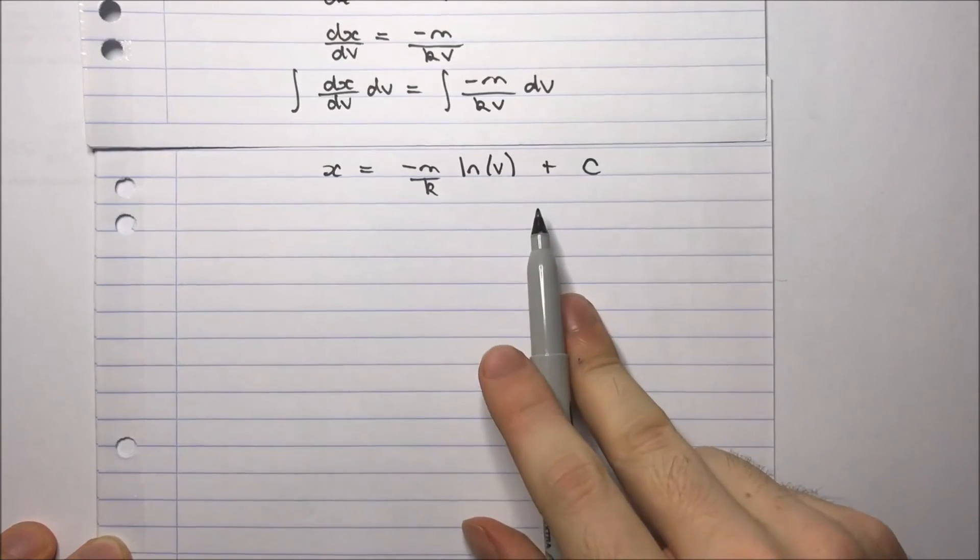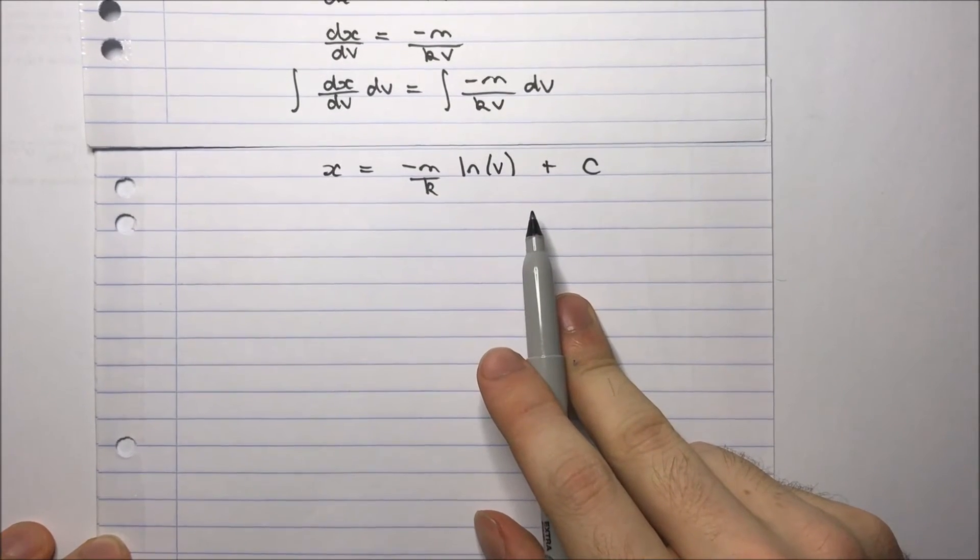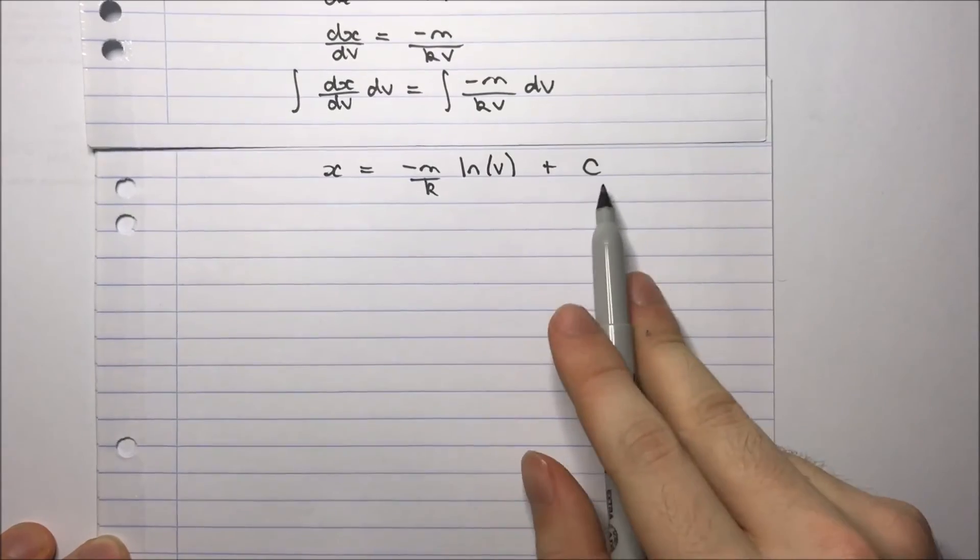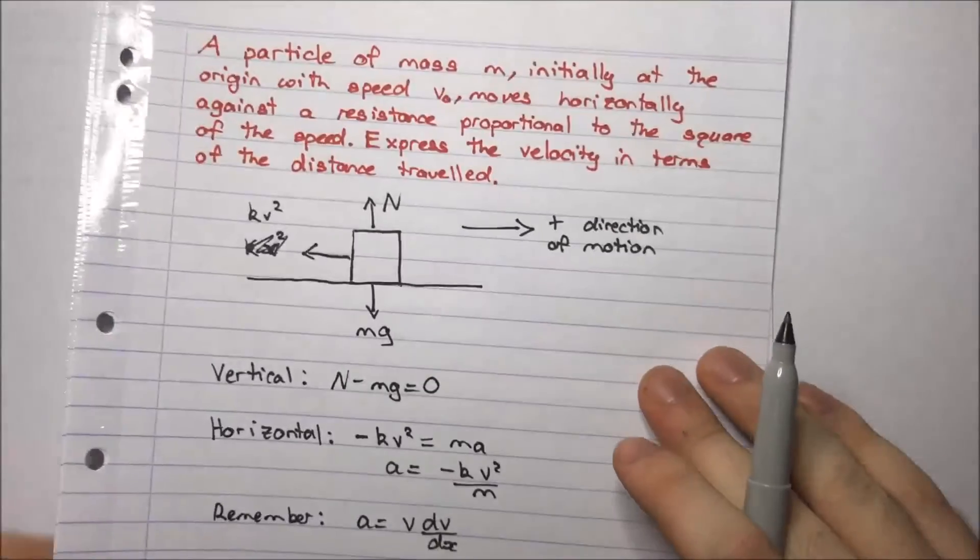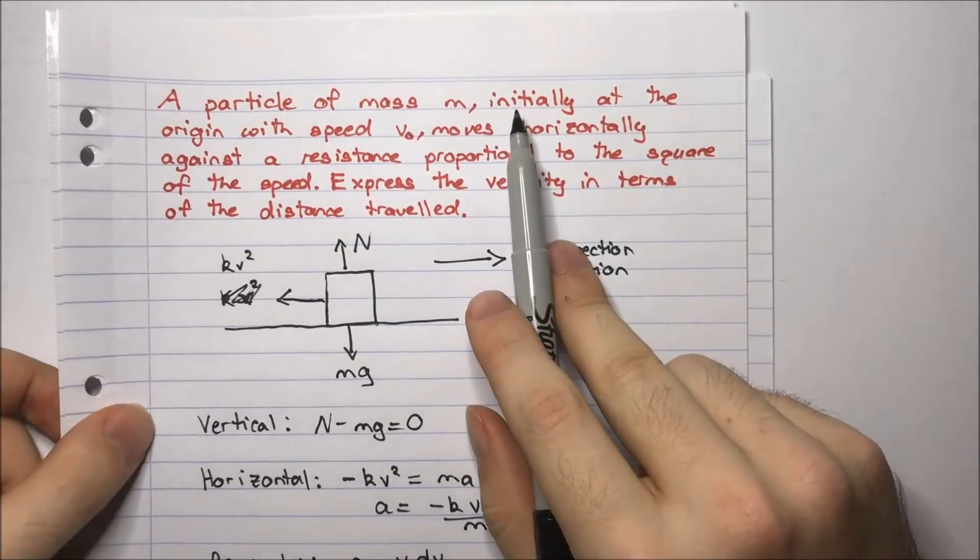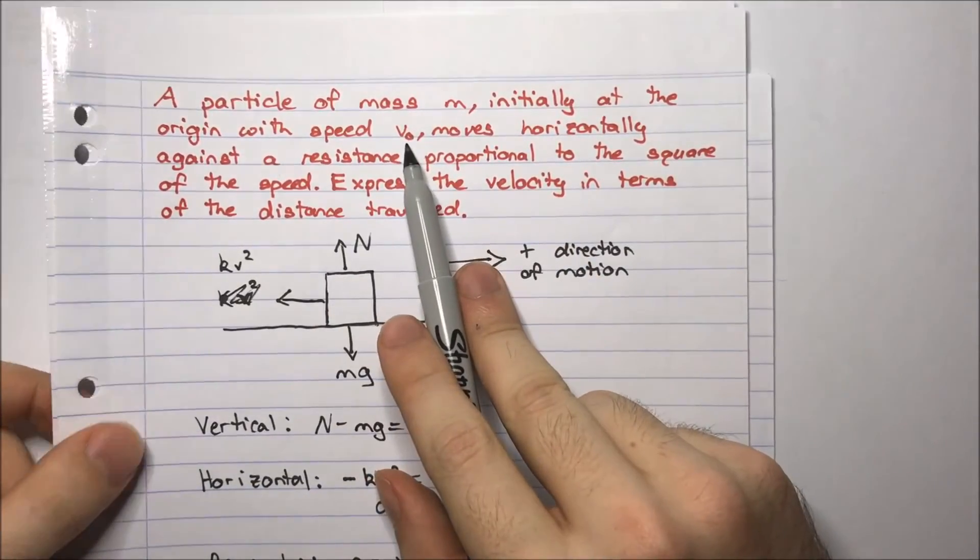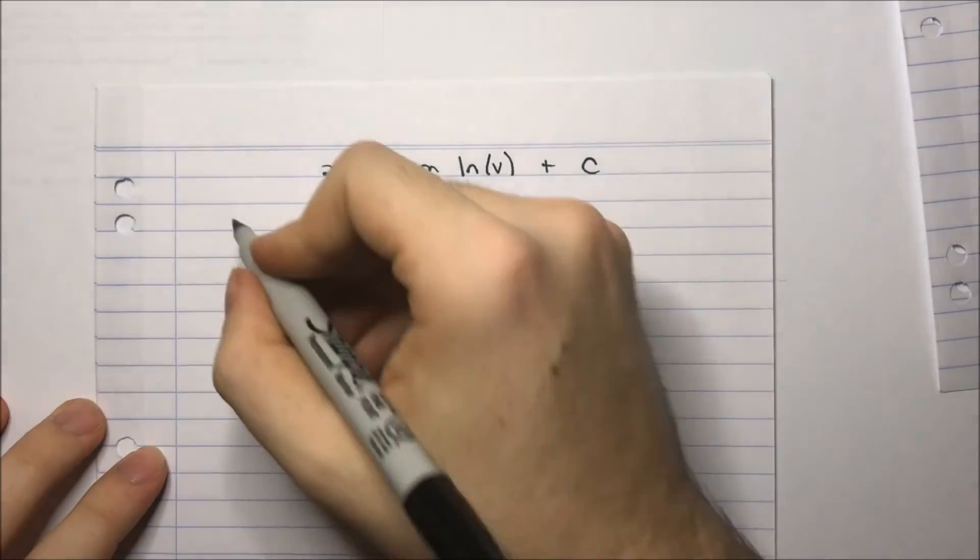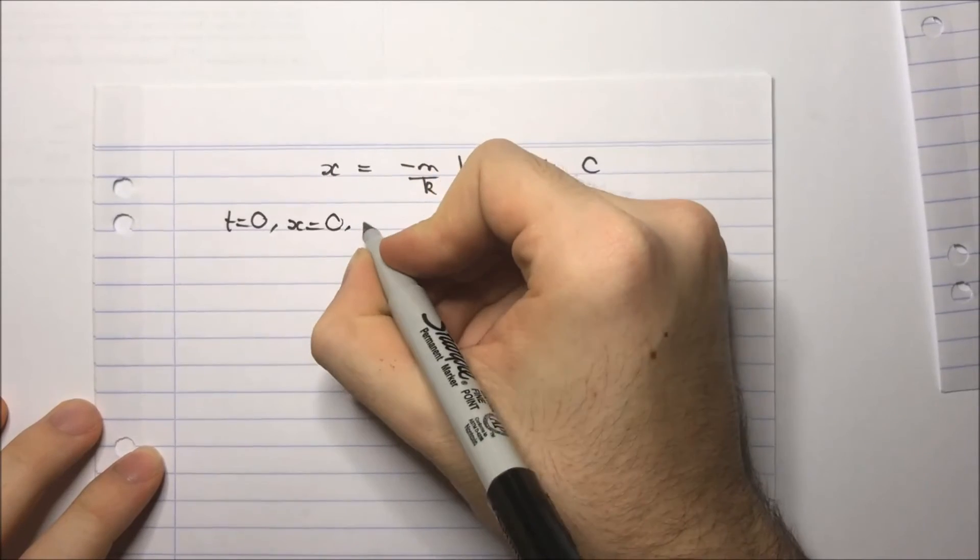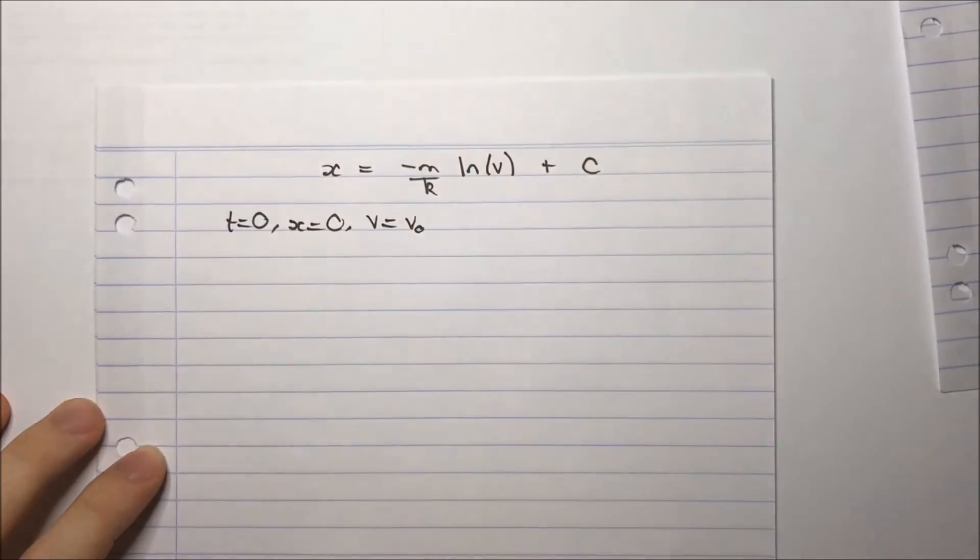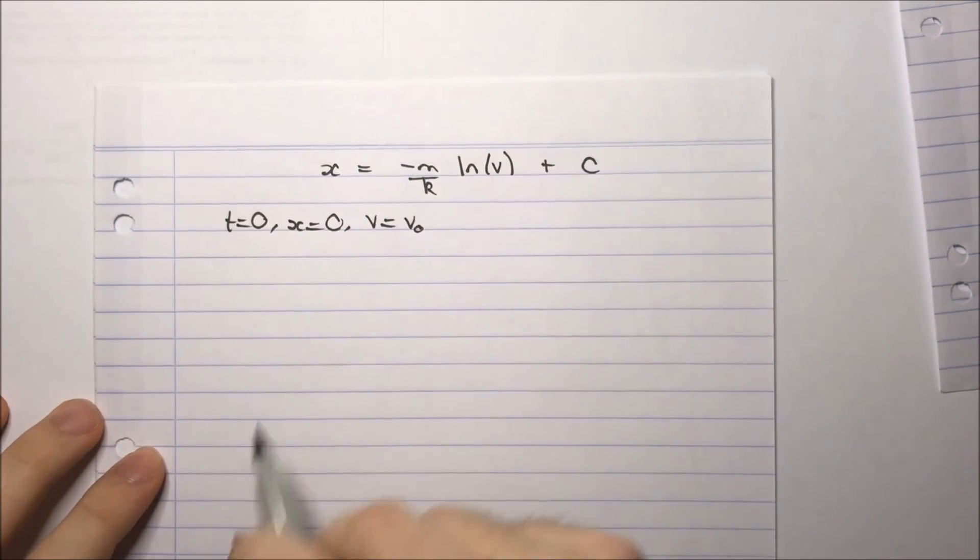So now we have this expression, but we need to find out what our constant c is. In the question, we were told that the particle initially has a speed v0 at the origin. So that means when t is 0, x is 0, and v equals v0. Our speed is v0 initially at the origin.